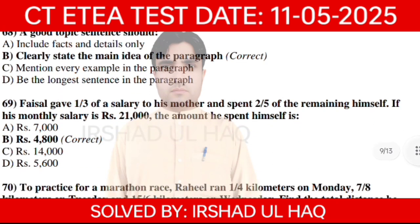Faisal gave 1/3 of his salary to his mother and spent 2/5 of the remaining himself. His monthly salary is 21,000. The amount he spent is option B: 4,800.